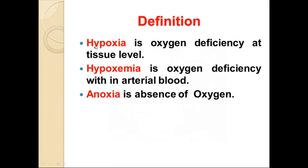The definition of hypoxia is an oxygen deficiency at the tissue level. Hypoxia is a condition of oxygen deficiency at the tissue level. Hypoxemia is an oxygen deficiency in the arterial blood. Anoxia means absence of oxygen.